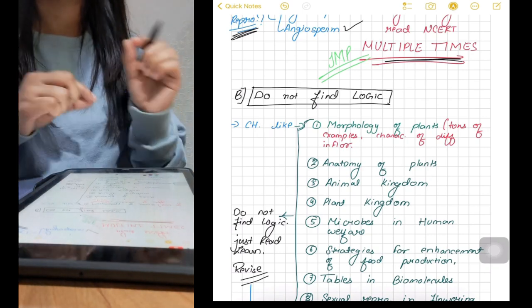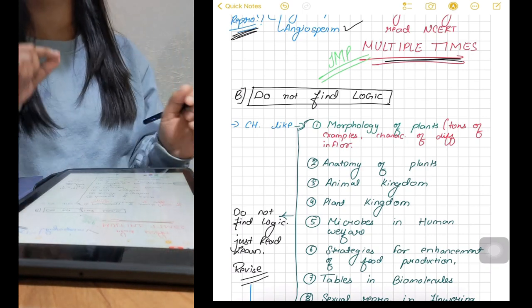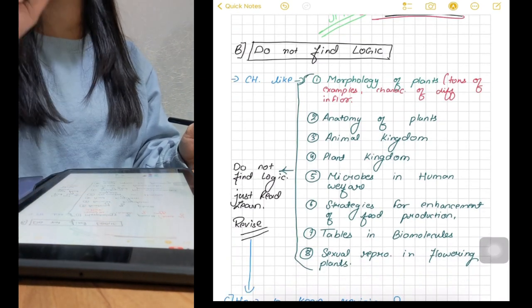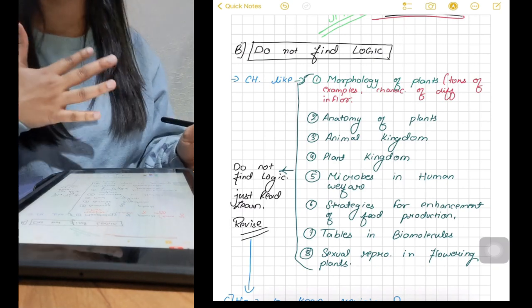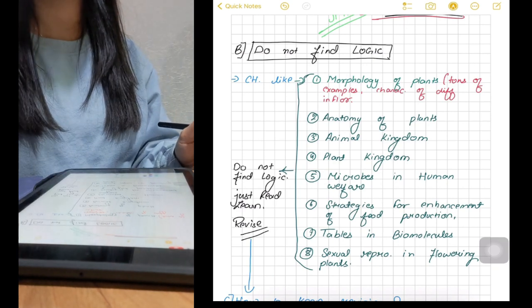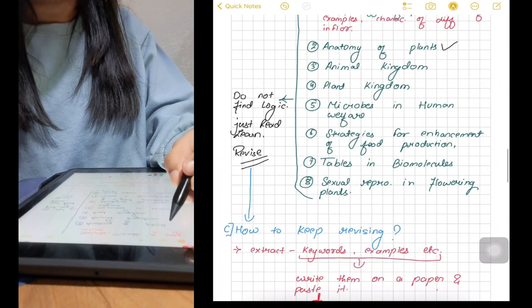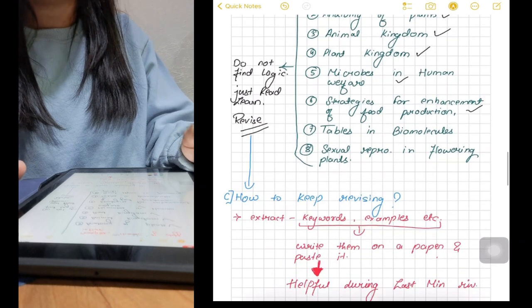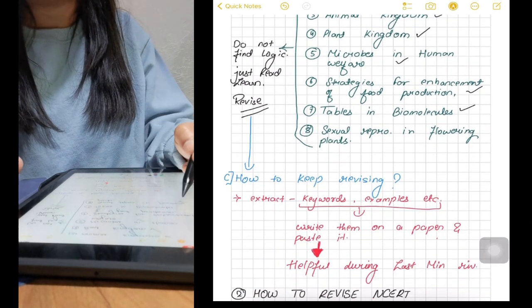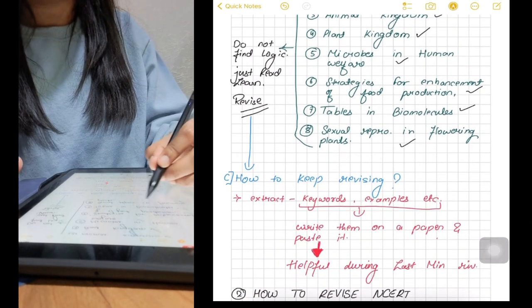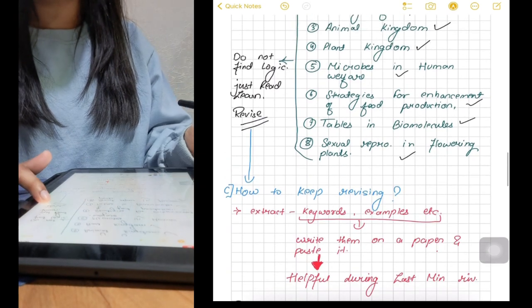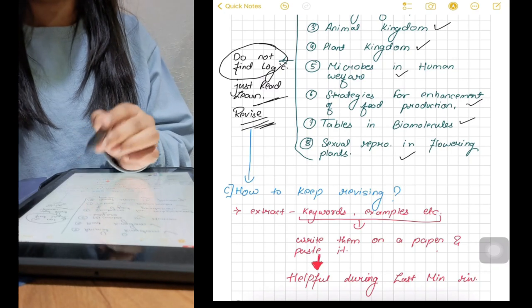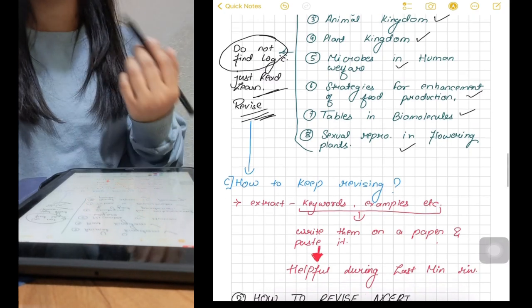Another thing is do not find logic in few topics. There are some parts that are not very logical. Like in morphology of plants, you have to learn tons of examples with characteristics of different inflorescences. Few more topics which are anatomy of plants, animal kingdom, plant kingdom, microbes in human welfare, strategy of enhancement of food production, tables in biomolecules and sexual reproduction in flowering plants are those topics where you don't have to waste your time finding logic. Just memorize all the important things and then keep revising them.